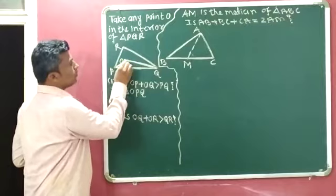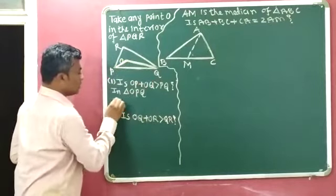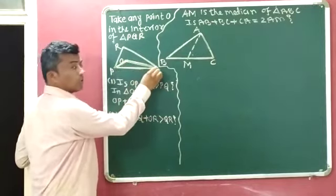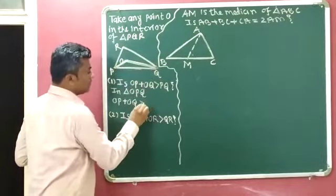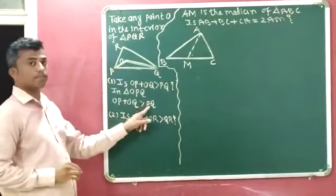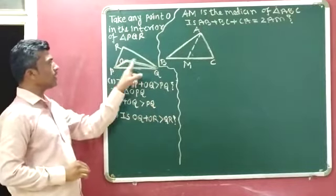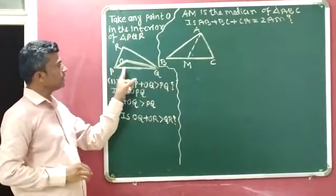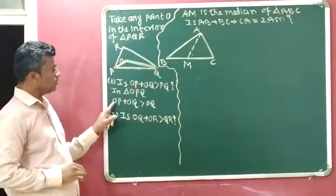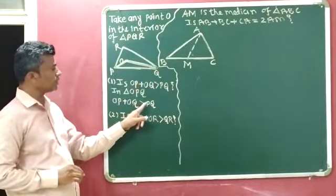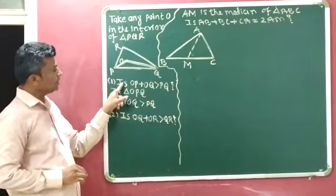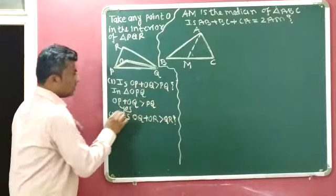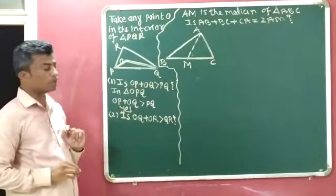The sum of length of OP and OQ is greater than the third side PQ. So OP plus OQ is greater than PQ. Our final answer: is OP plus OQ greater than PQ? Yes. OP plus OQ is greater than PQ.